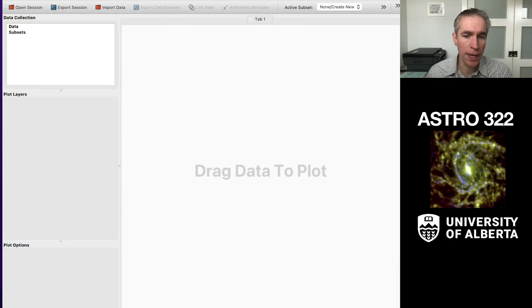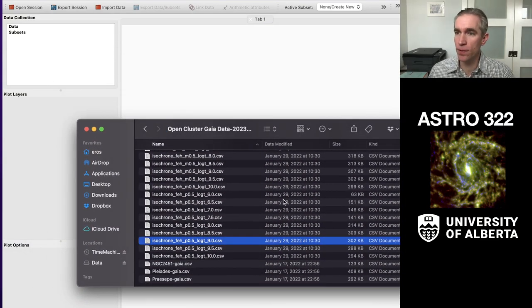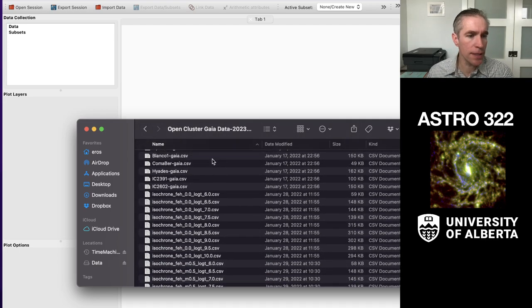Today I want to do a quick demonstration of how to do isochrone fitting using the Glue software package. So I've gone on to eClass and I've downloaded the OpenCluster Gaia data folder. And let me show you, here's a blank Glue session. And I downloaded all of these files in a single folder. There's a download button down at the bottom of eClass that grabs the whole folder. And it gets us all of these CSV files.